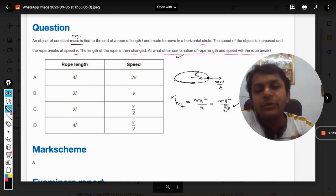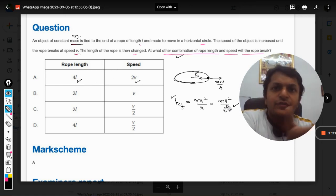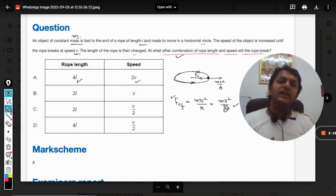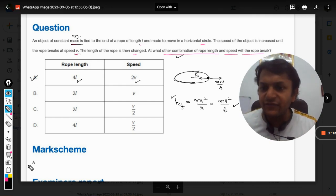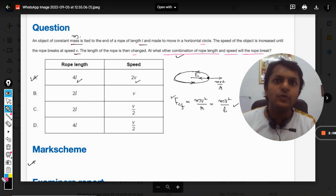Let's say the rope length is quadruple, multiplied by four, and the velocity is doubled. So v² becomes 4 times, and the four in the denominator will cancel. So definitely in the first case itself, yes, the answer is A. In case A, the centrifugal force is coming out to be equal to mv²/L.